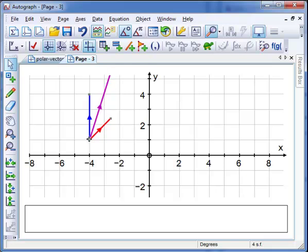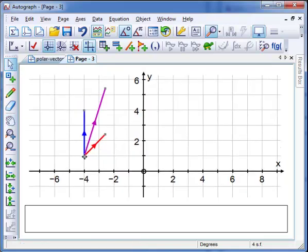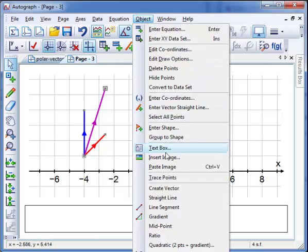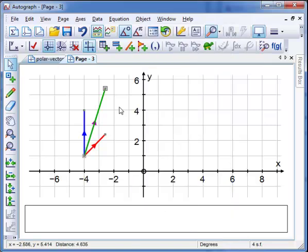Now if I want to show the magnitude, the length and the angle of this vector here, what I need to do is select these two points. Select that one and this one, and object, line segment. There it goes.